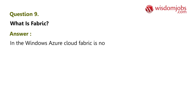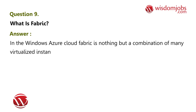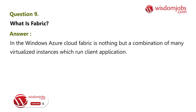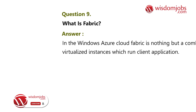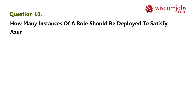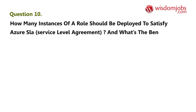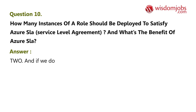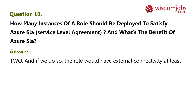Question 9: What is Fabric? Answer: In the Windows Azure cloud, Fabric is a combination of many virtualized instances which run client applications. Question 10: How many instances of a role should be deployed to satisfy the Azure SLA (Service Level Agreement), and what is the benefit? Answer: Two instances. If deployed with two instances, the role will have external connectivity at least 99.95% of the time.